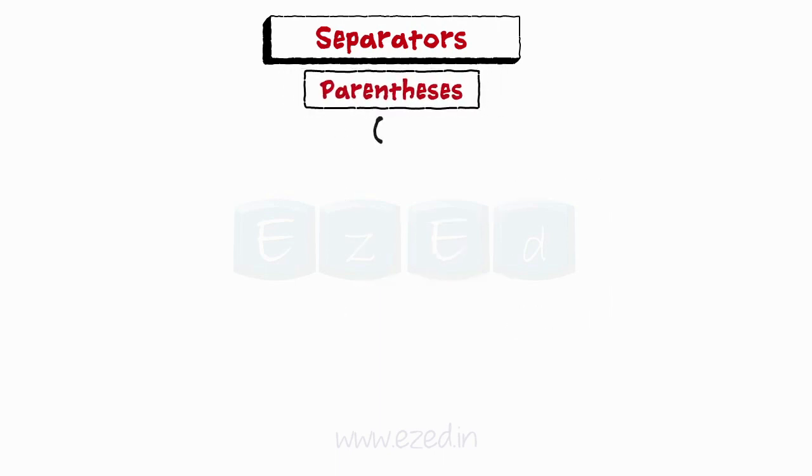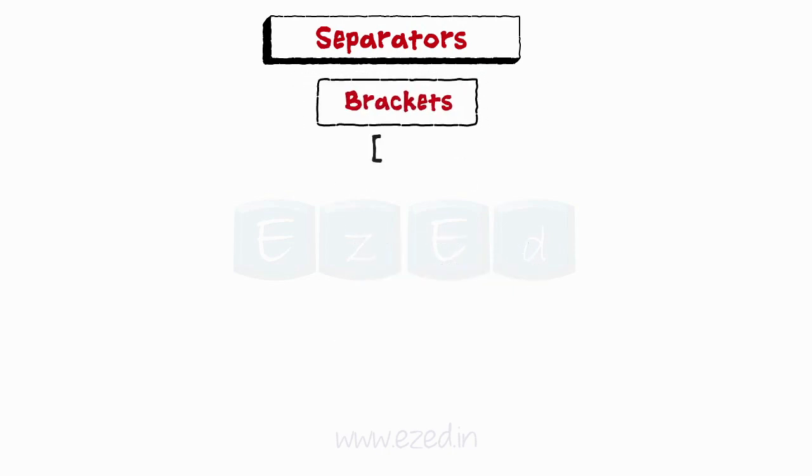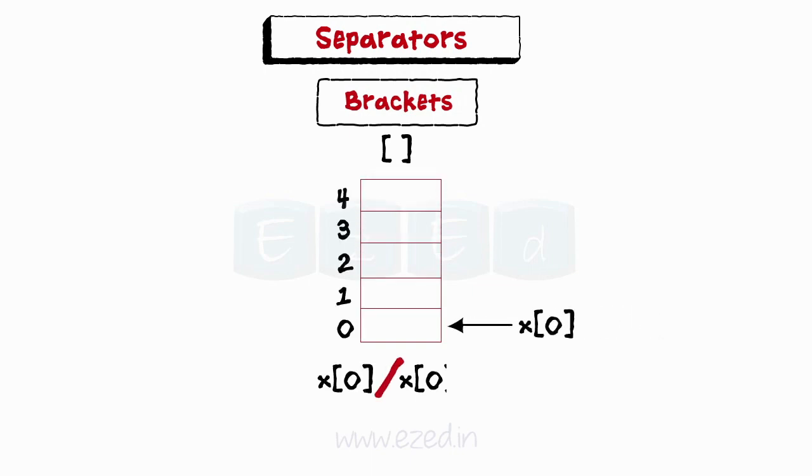Parenthesis: These special symbols are used to indicate function calls and function parameters. Brackets: Opening and closing brackets are used as array element reference. These indicate single and multidimensional subscripts.